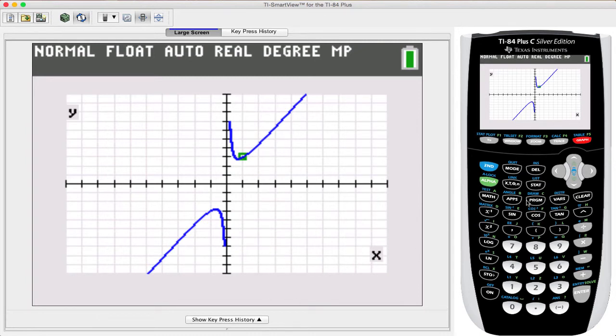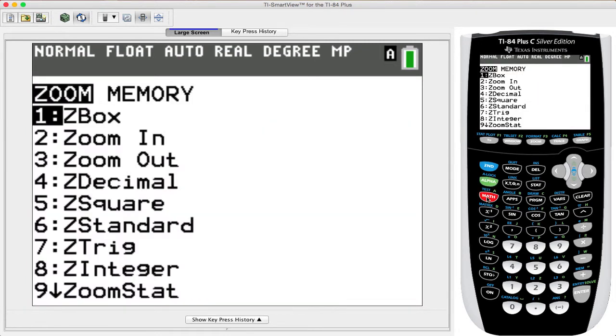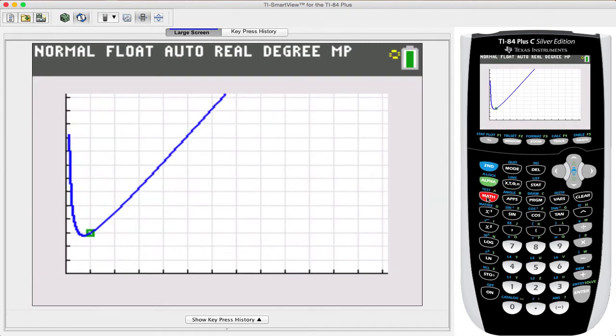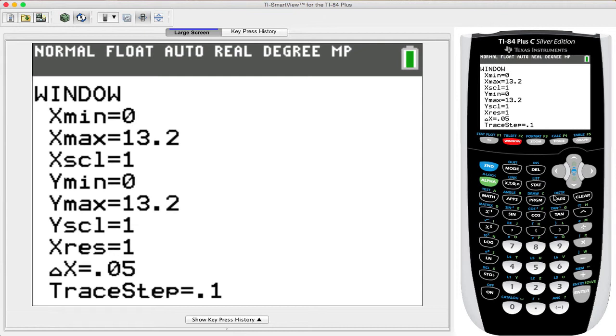Everything is happening in our first quadrant, so let's zoom in there. Let's click Zoom, let's press Alpha and then Math for our first quadrant. We see that we can focus on the x value of 2 as the maximum and a y value of 4 as the maximum.